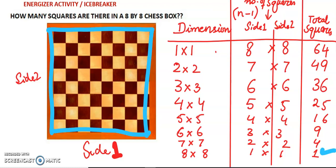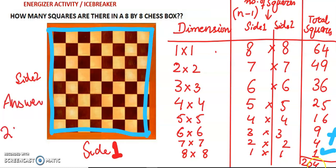At the end we will add all these numbers of squares to get the total number of squares in this chess box. Adding them all together we get 204 squares. So our answer is 204 squares.